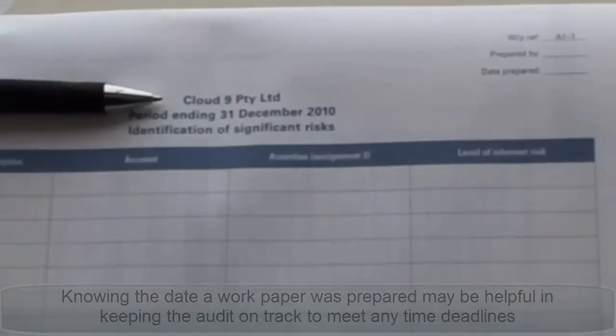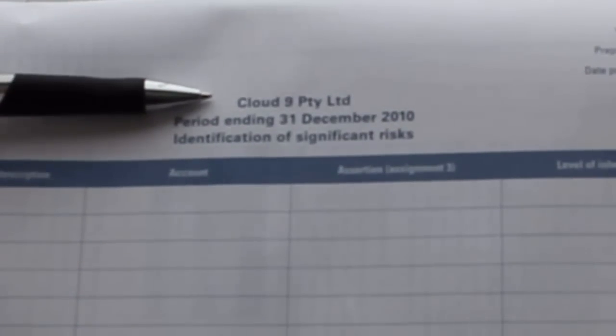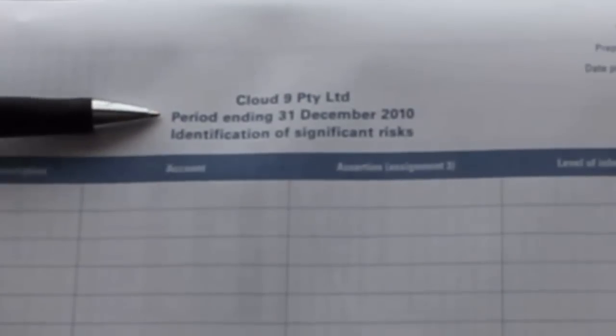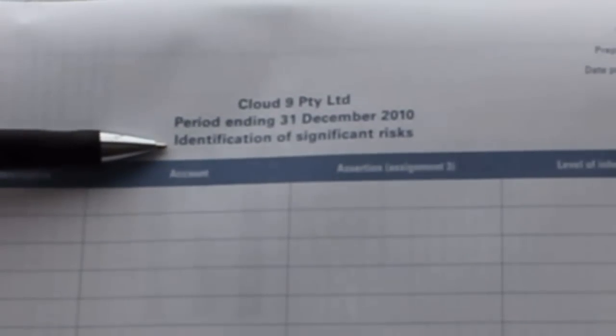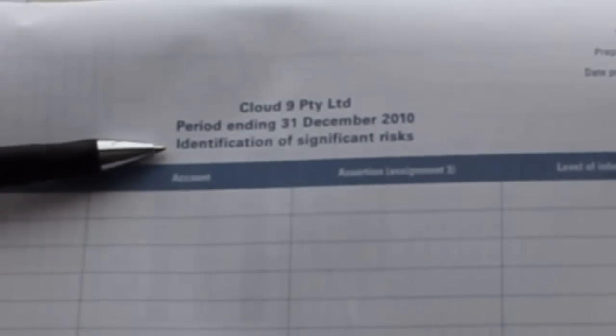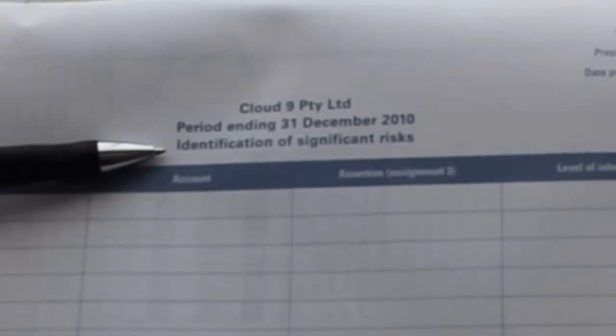So what else do you see in a work paper? We see the name of the company so that we know we're doing the right client work, the financial year, and then the heading that tells us what part of the audit we're actually doing. So for Assignment 1 in Cloud 9, we're actually identifying significant risks.